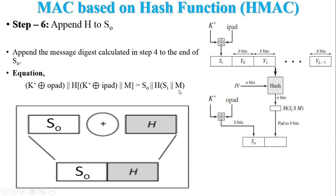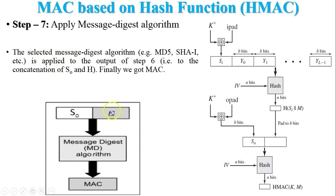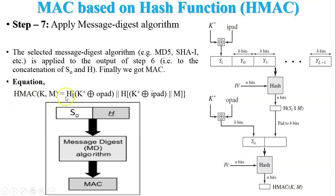Step 7: apply the hash function again — the message digest algorithm is applied once more. So and the hash H are both inputs, appended together, and fed into the message digest algorithm to finally calculate the MAC. The selected algorithm, MD5 or SHA-1, is applied to the output of Step 6. Our final equation is: HMAC(K, M) = Hash((K+ XOR opad) || Hash((K+ XOR ipad) || M)). Finally we get the MAC from the original message M using the hash function and secret key.